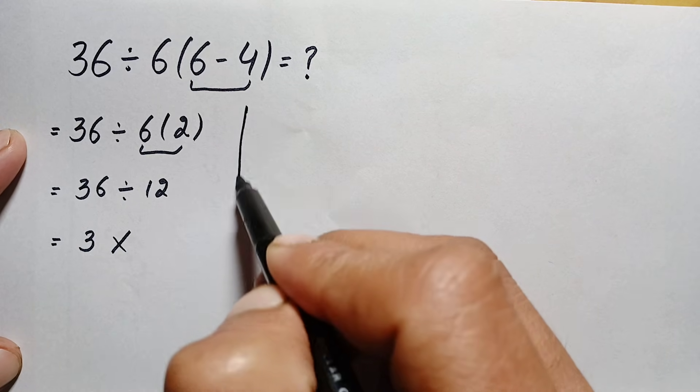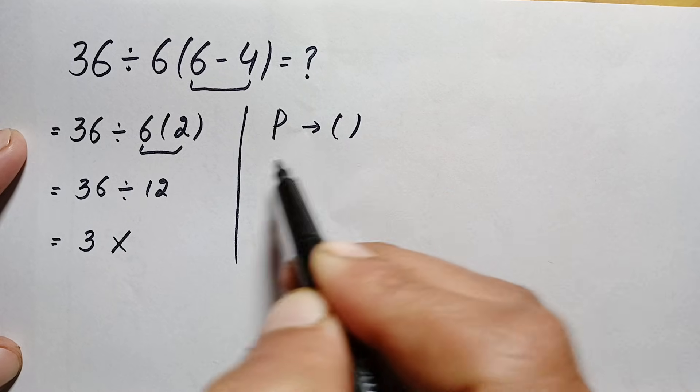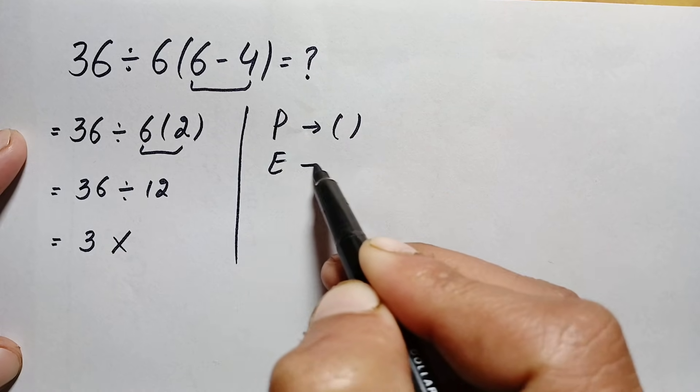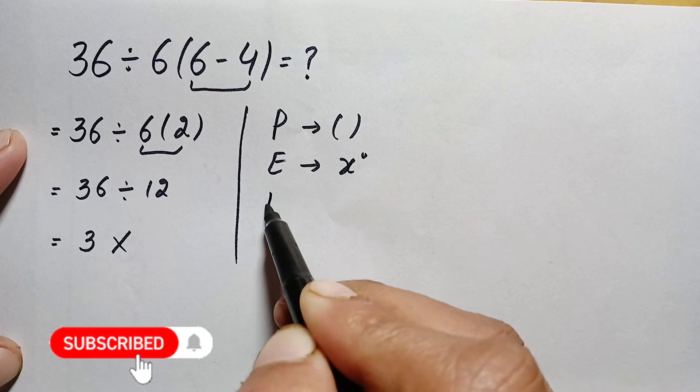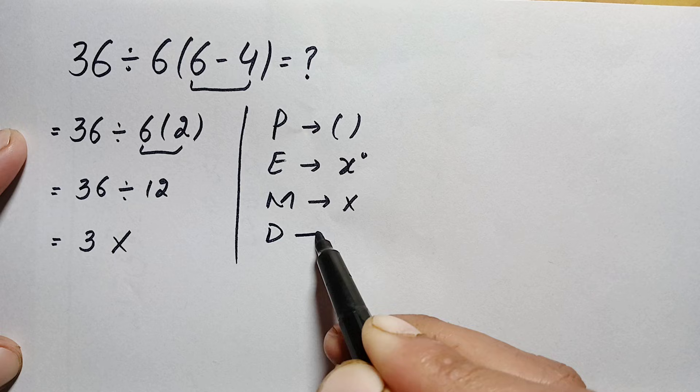In PEMDAS rule, P stands for parenthesis, E stands for exponents or powers, M stands for multiplication, D stands for division...